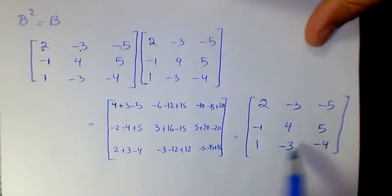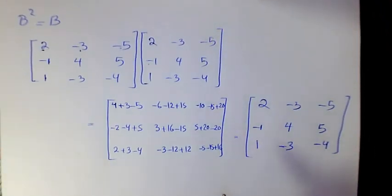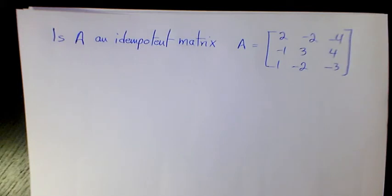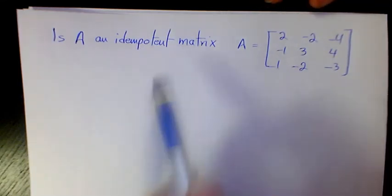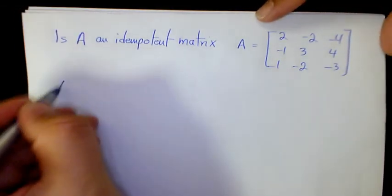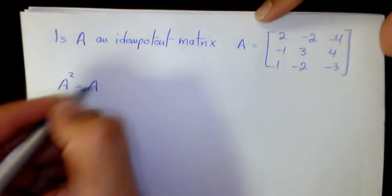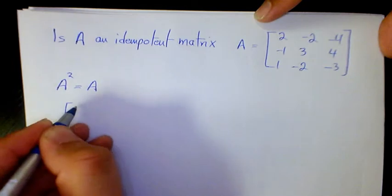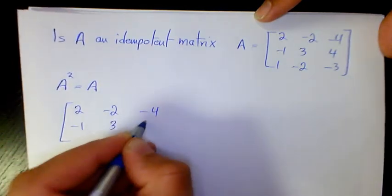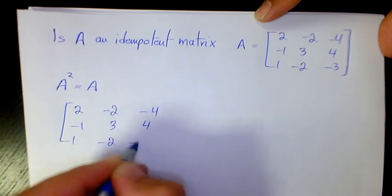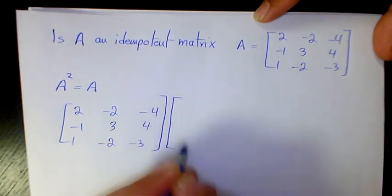A square matrix is called an idempotent matrix when the square of the matrix equals the original matrix. Now in this next example, I want to show you if a matrix is going to be idempotent or not. We need to have A squared equals A. So we multiply two, negative two, negative four, negative one, three, four, one, negative two, negative three by itself.